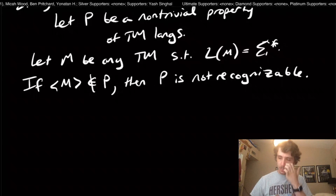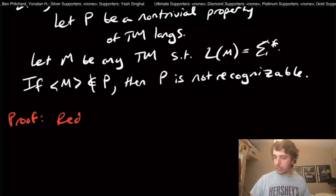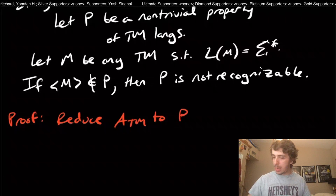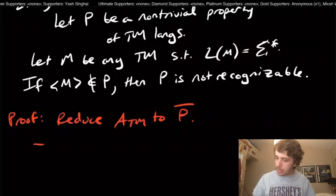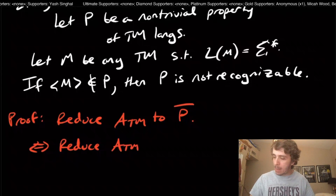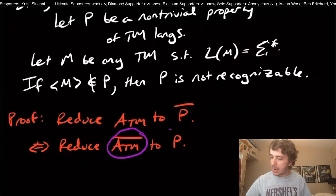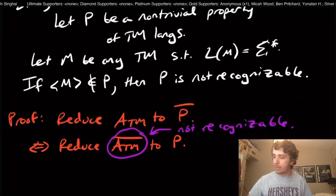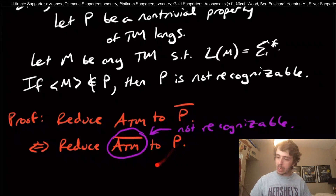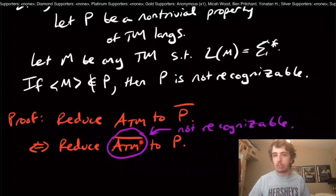So how do we actually prove this? We're going to reduce ATM to the complement of P. If you know what a reduction is, you can flip the answers on both sides, so this is equivalent to reducing ATM-bar to P without the complement. ATM-bar is not recognizable, and this is helpful because if P were recognizable, we could compute this reduction and solve with the recognizer for P — but that would imply ATM-bar is recognizable, which we know it isn't.